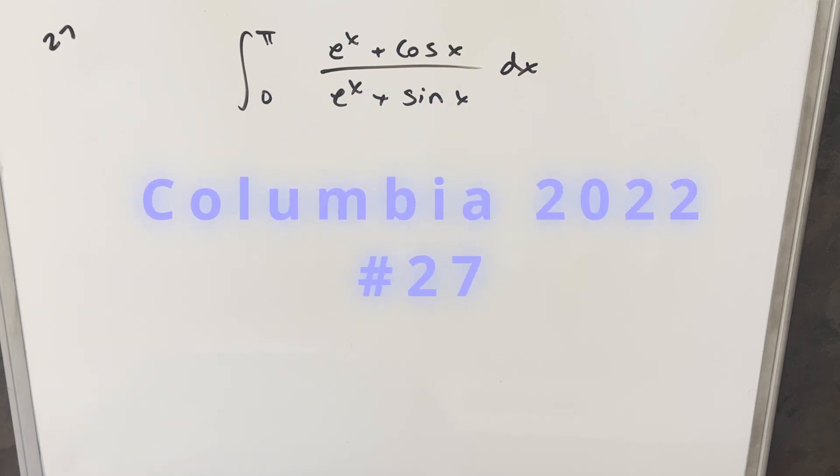Okay, we have here a really quick integral. This one's from the Columbia Integration B 2022, problem 27. We have the integral from zero to π of (e^x + cos x)/(e^x + sin x) dx.